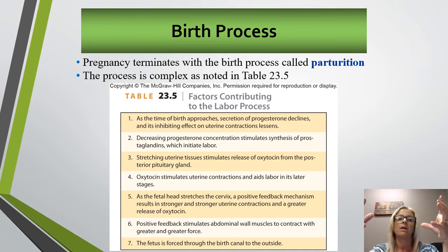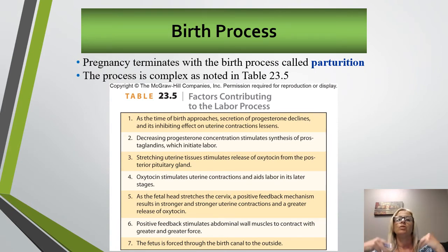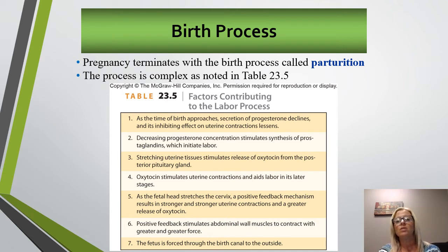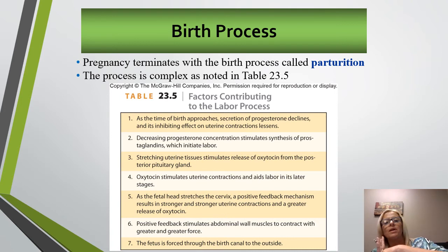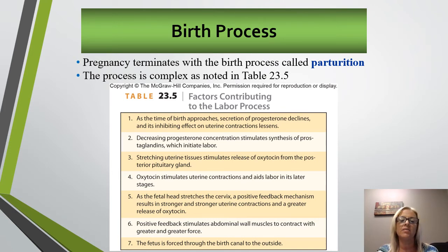Parturition is a positive feedback mechanism. Inhibition of progesterone starts the process of childbirth — progesterone suppresses uterine contraction during pregnancy. Lifting that progesterone inhibition triggers uterine contractions. Uterine stretching causes oxytocin to be released from the posterior pituitary, which causes uterine contractions. These cycle up, producing greater excitability of the myometrium — the muscle layer — which helps labor progress. The baby's head presses against the cervix, triggering stretch receptors and stimulating even stronger contractions, producing strong contractions until maximum effort is reached.